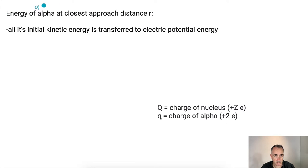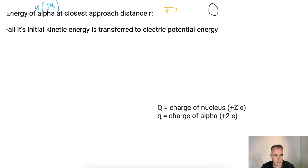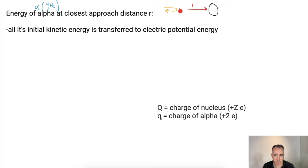Let's look at the energy of this alpha particle — helium-4. At its closest approach, what happens? It's coming in, and at the point where it turns around, all the initial kinetic energy has been transferred to electric potential energy, because at that point it has zero kinetic energy — it stops. So kinetic energy equals electric potential energy.